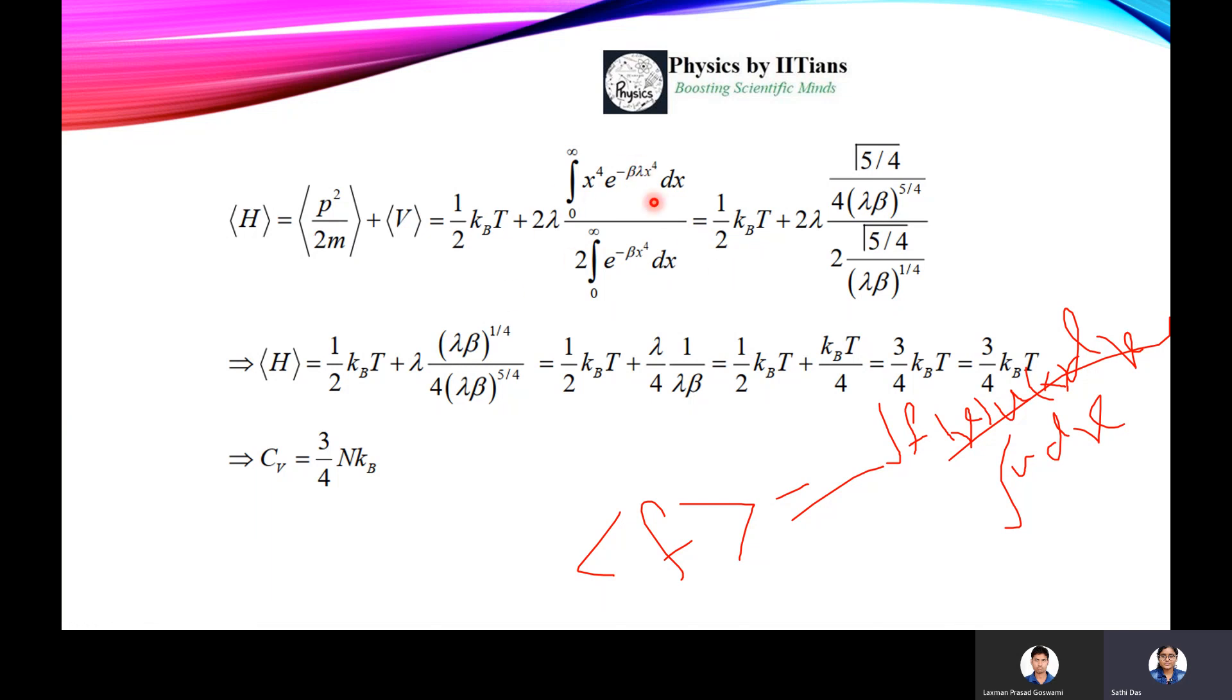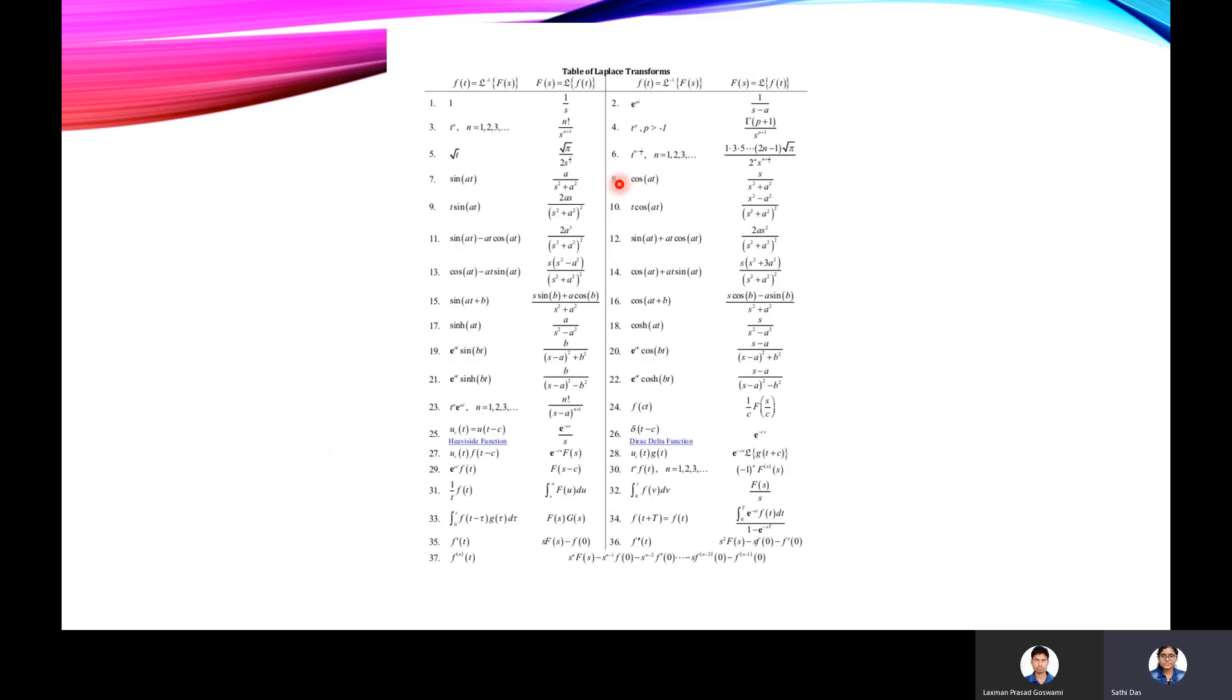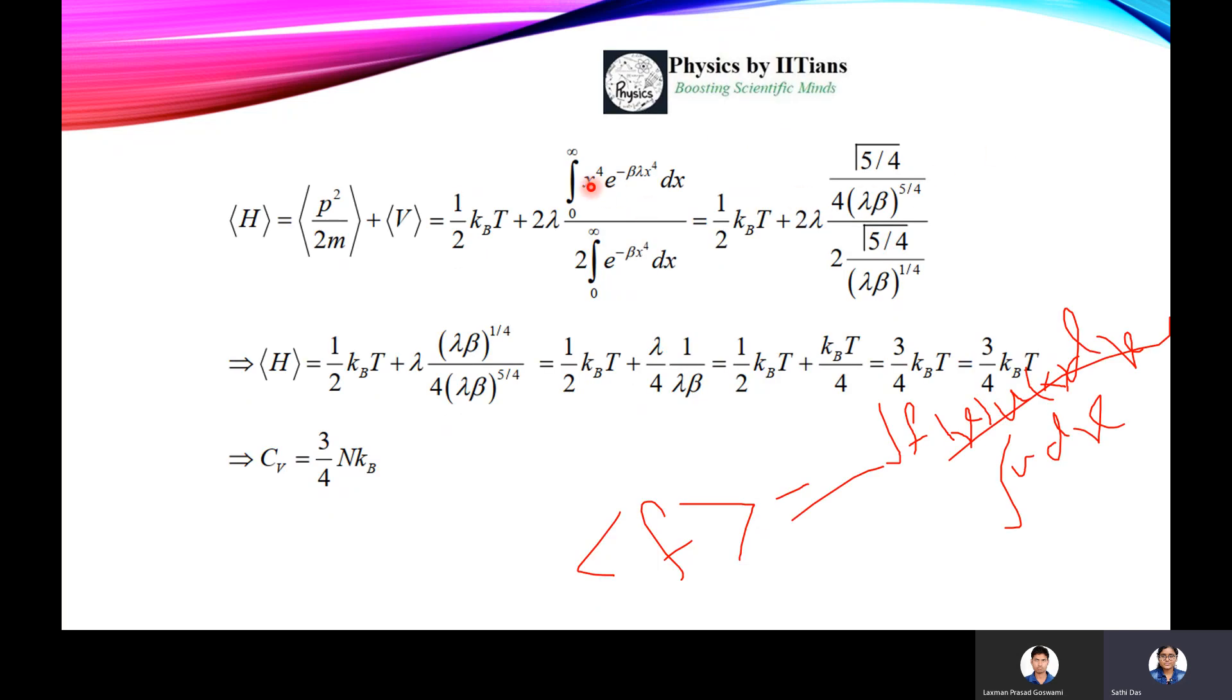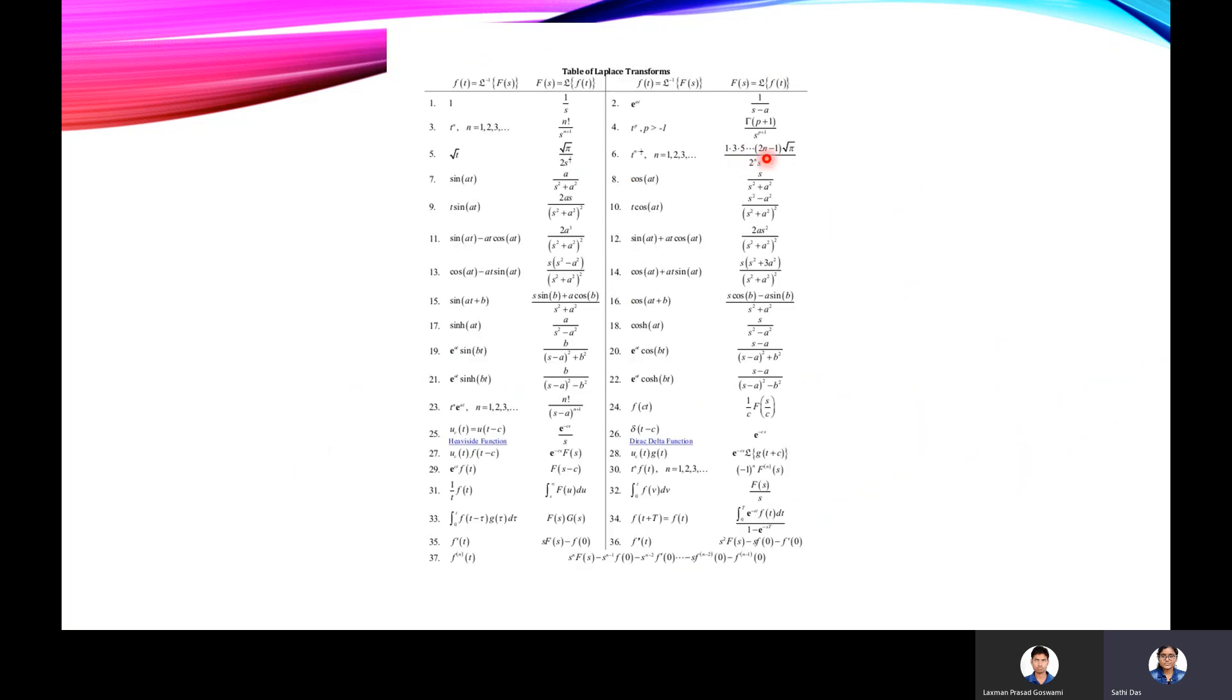Now how do you find out this integration? So this is 0 to infinity x to the power 4 e to the power minus beta lambda x to the power 4 dx. This is nothing but the Laplace transform. Laplace transform of t to the power n, what is the answer? That is t to the power n equals gamma p plus 1 by s to the power n plus 1. So here t to the power n is x to the power 4, and gamma n plus 1 means gamma 5 by 4, divided by 4 into lambda beta to the power 5 by 4. So just this one, this formula you have to put.